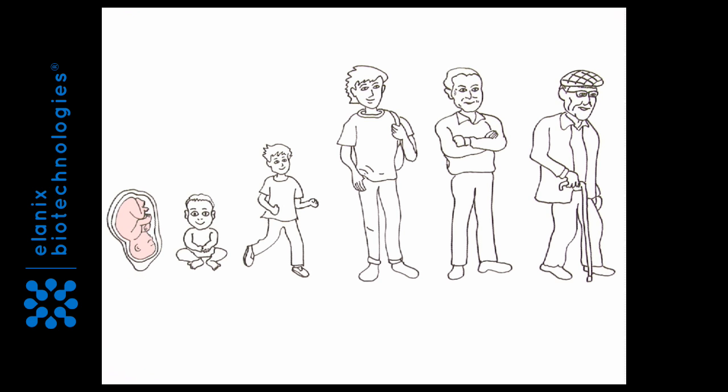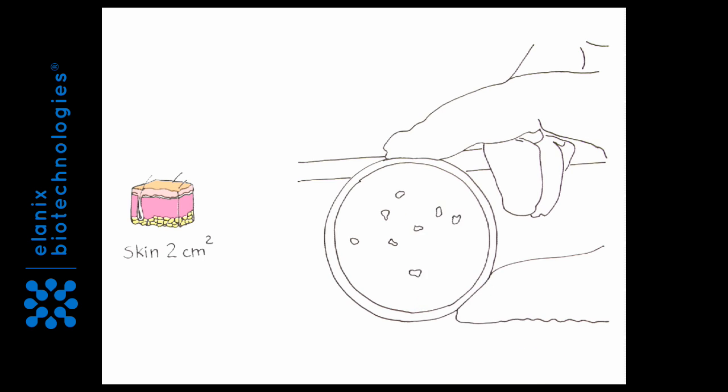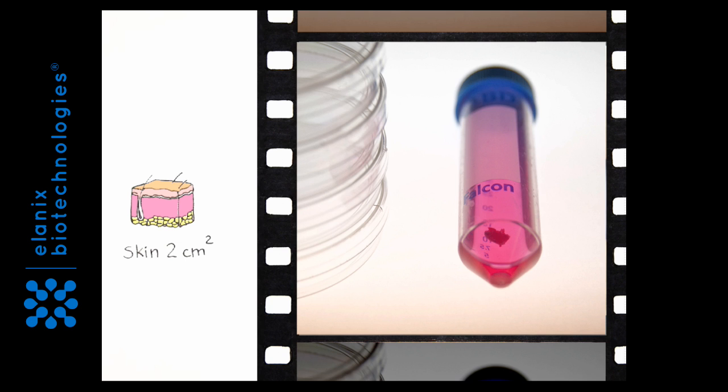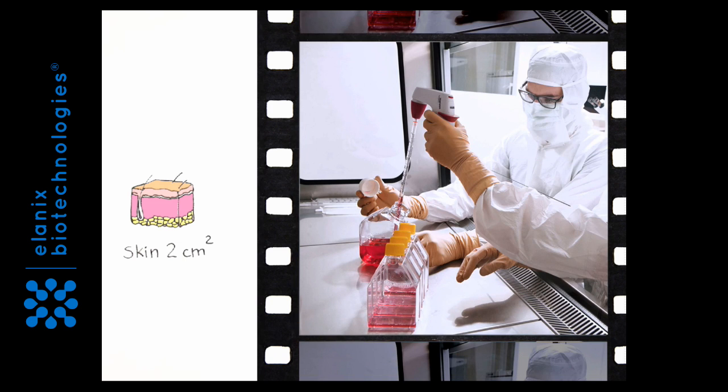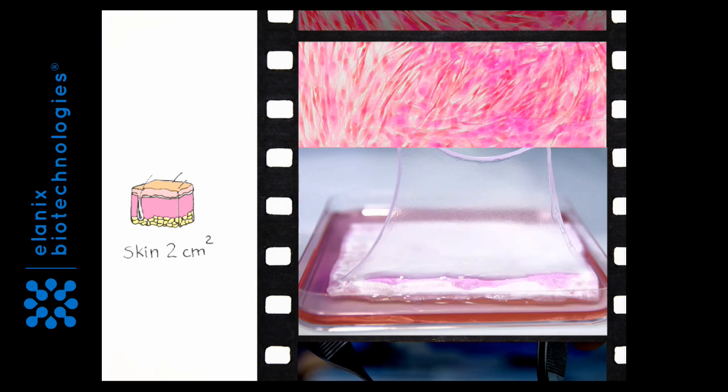Fetal progenitor cells are highly active. A small fetal skin sample from a single donor contains vast amounts of such cells. They can be isolated in a well-defined procedure and grown in vitro and amplified at will.